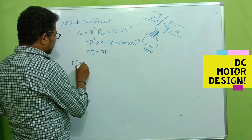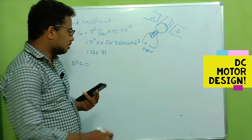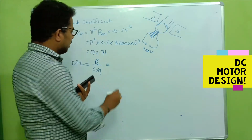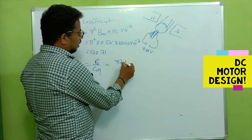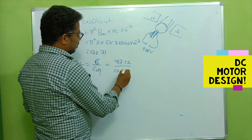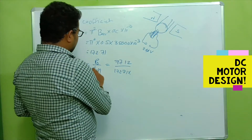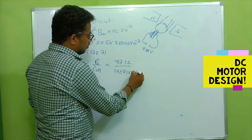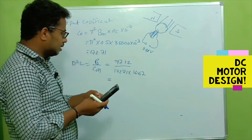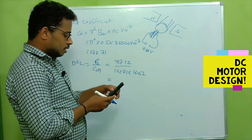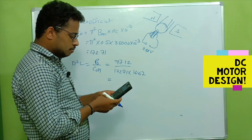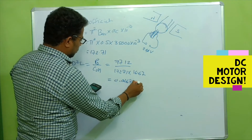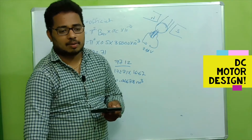Now let's calculate the D²L product. The formula is: D²L = Pa / (C0 × n), where Pa = 77.12 kW, C0 = 172.71, and n = 16.67 RPS. Calculating: 77.12 / (172.71 × 16.67) = 0.02678 m³, which we can also write as 26.8 × 10⁻³ m³.